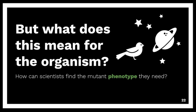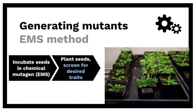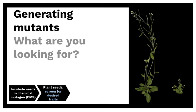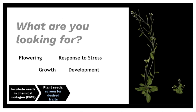So what does this mean for the organism? How do scientists find the mutant phenotype they need through a random mutagen screen? After we expose them to the chemical mutagen, we could plant the seeds and screen for the desired traits. Maybe we would get some loss-of-function mutants, or maybe we would get some novel mutant phenotypes — increased flowering, a different response to plant stress hormones, increased growth, or different types of development.